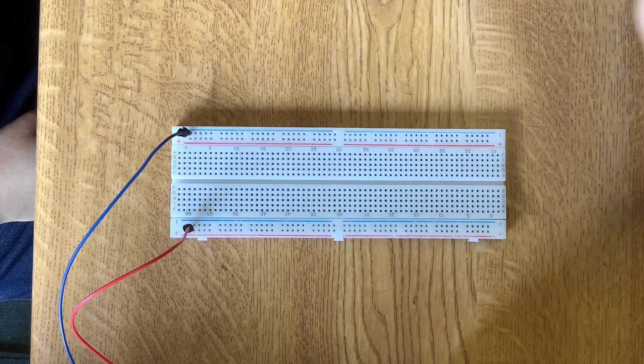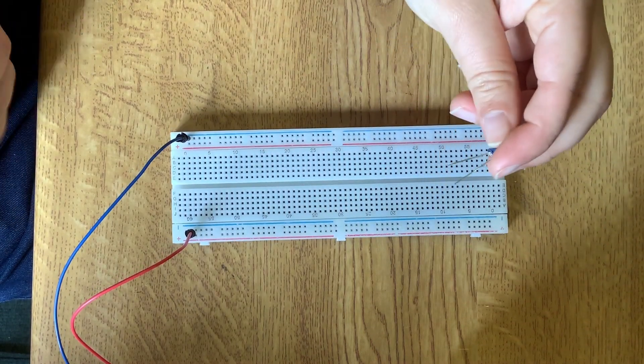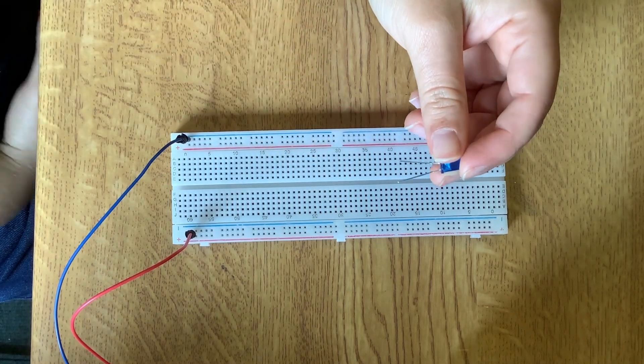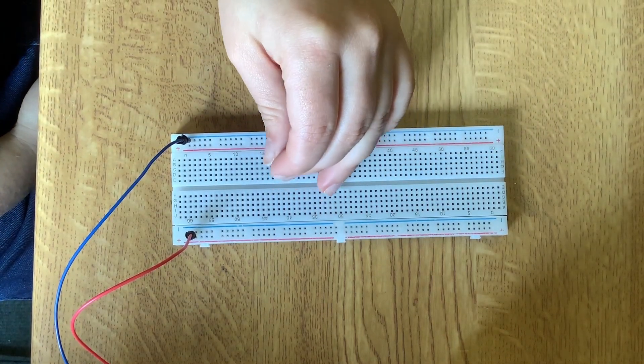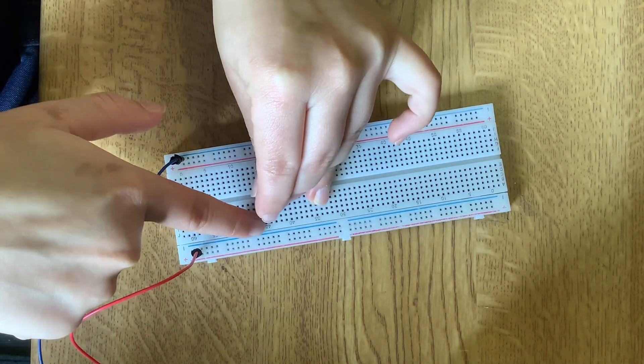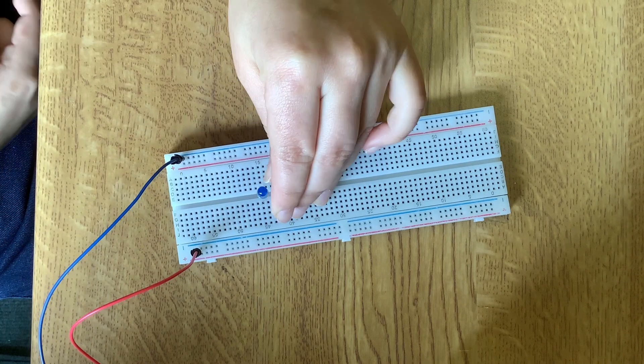I'm going to use an LED and remember that the short one is always connected to ground and the long one is always connected to the voltage. So I'm going to put it here in line 15 and this is line 45. I'm going to put it there.